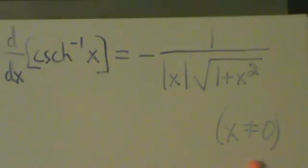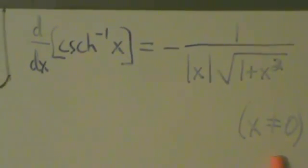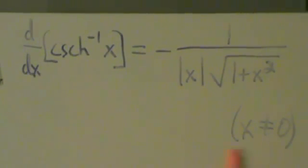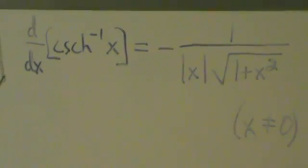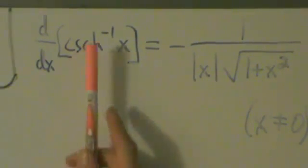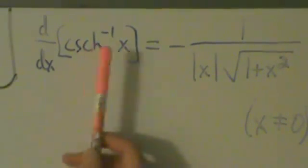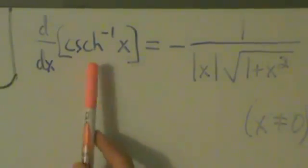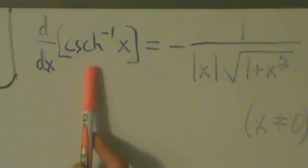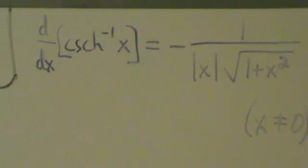Just like with our other inverse hyperbolic trig restrictions, this isn't really a calculus thing — we need it so that this is okay, but it actually comes from the definition of the inverse hyperbolic cosecant. This restriction comes from the definition of this function.